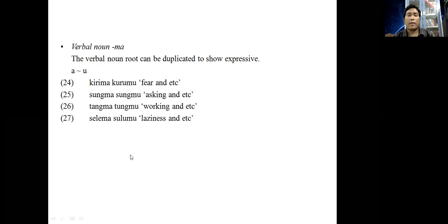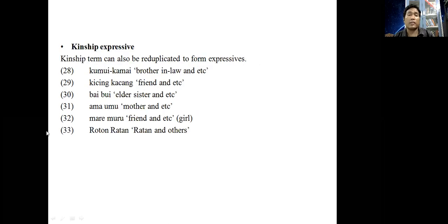And we have kinship expressives. The kinship term can also be reduplicated to form expressives. The personal nouns also can be reduplicated to form expressives in Kokhbarok. Examples 28 to 33: kumbu ikumai 'brother-in-law and others', kichang kachang 'friend and such', bai bui 'elder sister and etc.', ama umu 'mother and etc.', mare muru 'friend and etc.', and roton ratan 'Roton and such or others'.